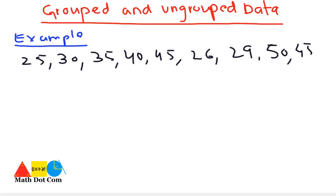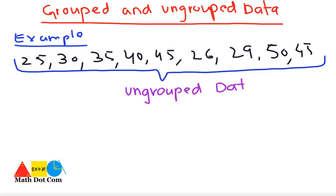When you mention data in such a way that nine students of the class have obtained the marks, and one student has got 25, one is 30, 35, 40, then you represent it as ungrouped data.